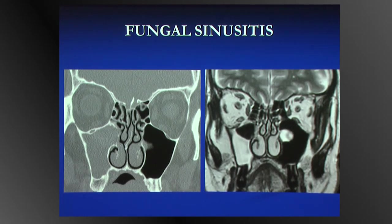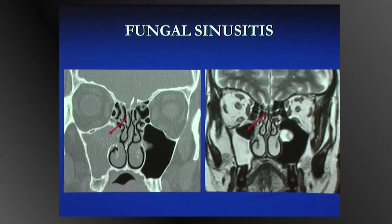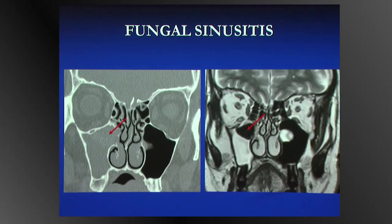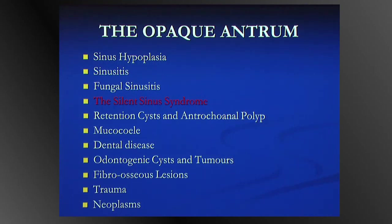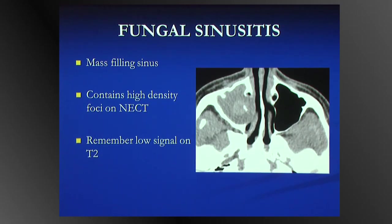The MR appearance of fungal disease can be extremely confusing. On MR, fungus is T1 hypo- and T2 hypointense. It is predominantly that T2 hypointensity that is confusing — the marked T2 hypointensity can be misinterpreted by the uninitiated as air. So a black sinus on MR is not always an aerated sinus. The hallmarks of fungal sinusitis are: an entity filling the sinus with central high-density material and/or calcification, thick walls, and be aware of the low signal intensity on T2.